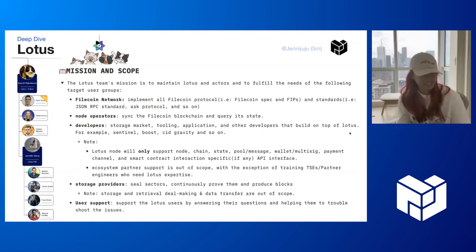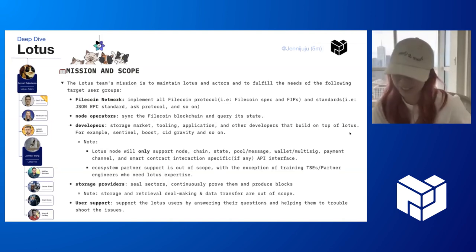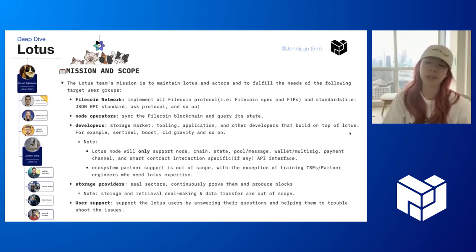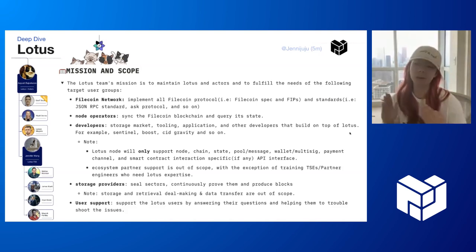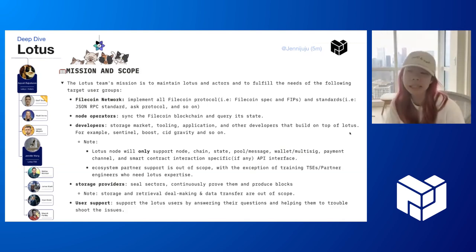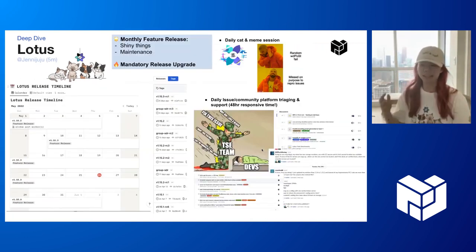We don't have to say storage providers — we need them to get all this data into the network. And also user support: we want to make sure we maintain a good open-source community and help further build the Filecoin network. So that's our mission scope. How do we ship all these things? We have a bunch of things Lotus is trying to do. We have been working very closely with the P2P IPLD team to get their stack also shipped in Lotus, as we are a user of their work.